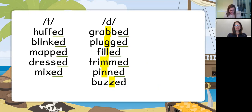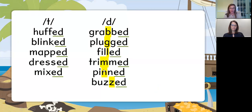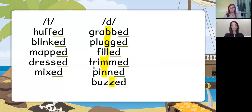The second sound for ED is the D sound. We say D for ED after all the voiced sounds, except for the letter D. So B, G, L, M, N, and Z are voiced sounds, and we're going to make a D sound at the end. Listen: grabbed, plugged, filled, trimmed, penned, buzzed. Your turn — read these and make a D sound when you get to ED. Grabbed, plugged, filled, trimmed, penned, buzzed. Excellent — we heard D at the end.